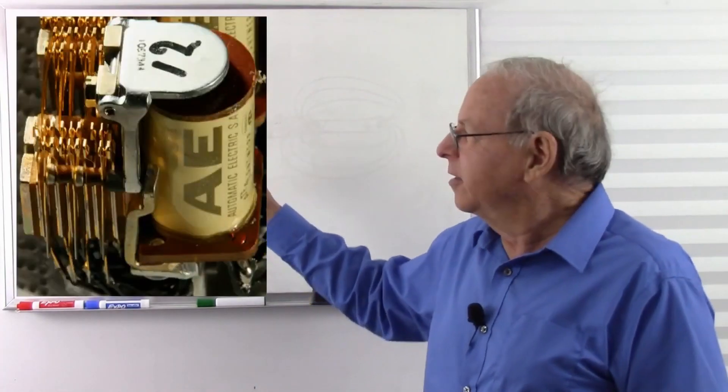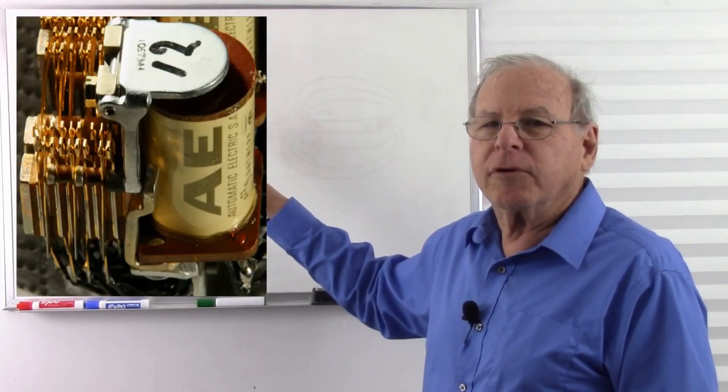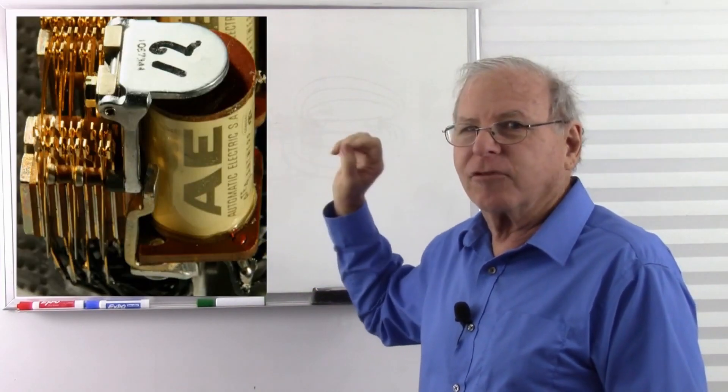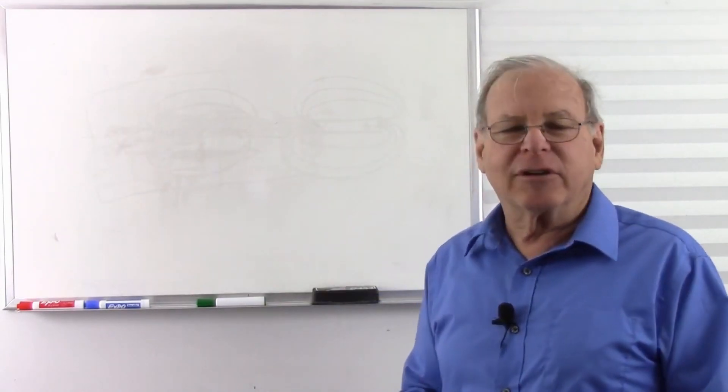Here's a relay that has many, many contacts on it. It has a lot of double pole, double throw switches in there. So they're all ganged together. So one current into the relay operates many, many switches.